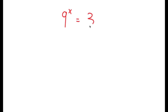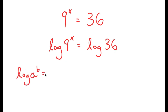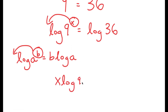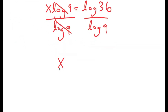In this video I'm going to solve the equation 9 to the power of x is equal to 36. So to solve this equation, I'm going to first start by taking the log on both sides. So I get log of 9 to the power of x is equal to log of 36. I can move the exponent x to the front, so I get x times log 9 is equal to log 36. And from here I can divide both sides by log 9, so I get x is equal to log 36 over log 9.